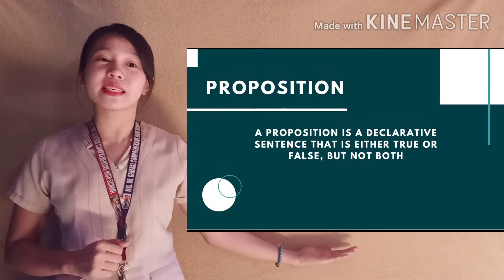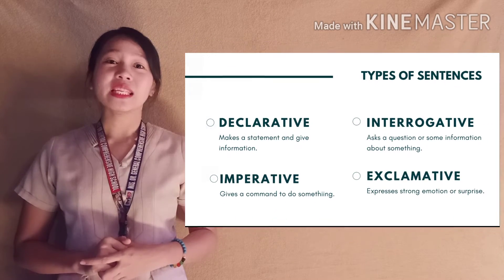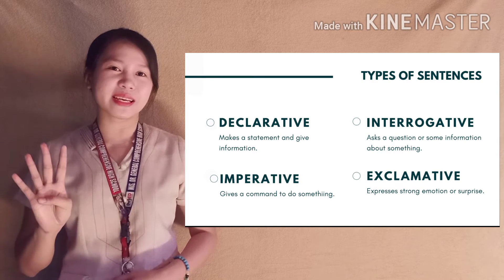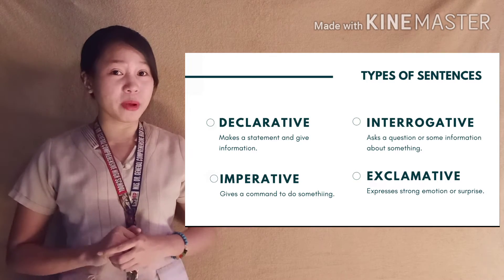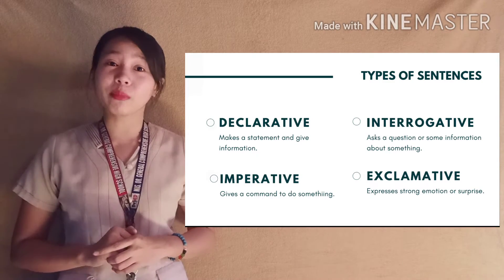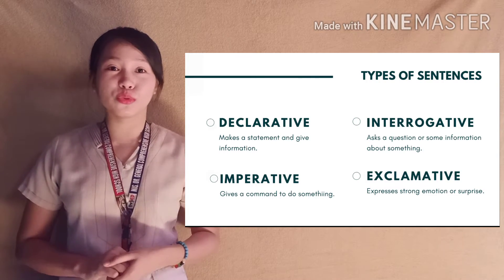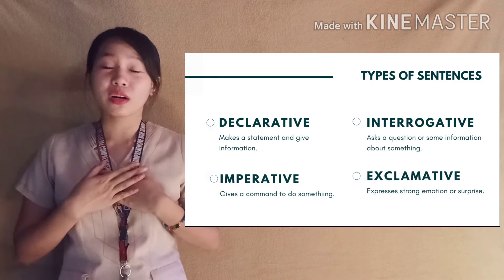A proposition is a declarative sentence that is either true or false, but not both. Remember that a declarative sentence is one of the four types of sentences: declarative, interrogative, imperative, and exclamative sentences. A declarative sentence makes a statement or gives information. An interrogative sentence asks a question. An imperative sentence gives a command. And an exclamative sentence expresses a strong emotion or surprise.